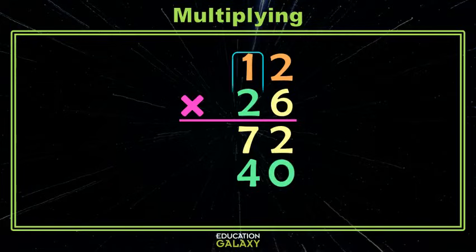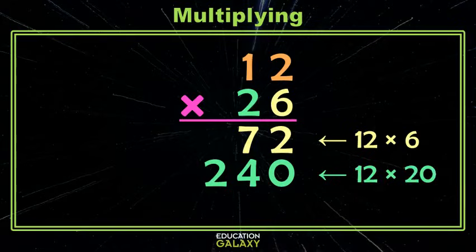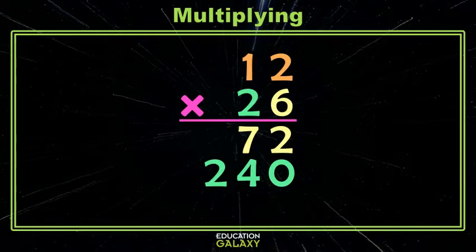Lastly, we multiply our 1 and our 2, which gives us 2, and we're almost done. But I want to point something out. This looks a little bit like our last example, where the 72 is 12 times 6 and the 240 is 12 times 20. Remember, when we break the numbers apart like that, ultimately we'll need to add our 2 products.